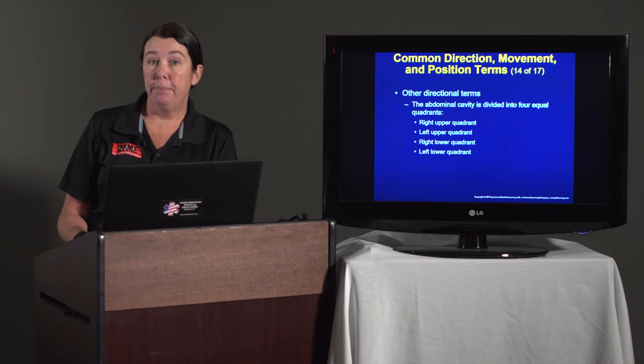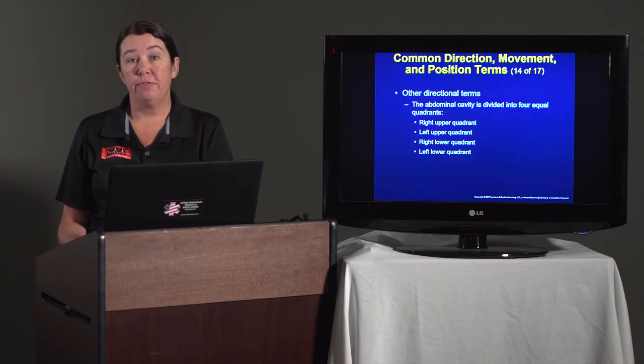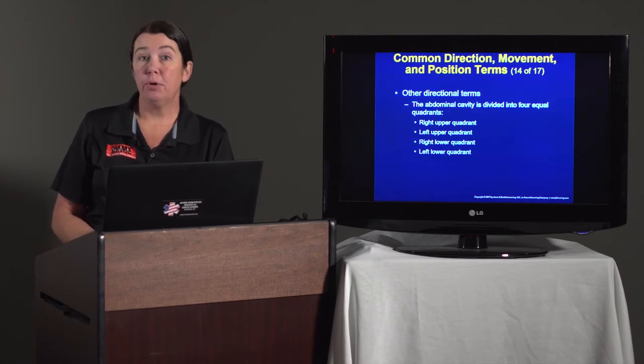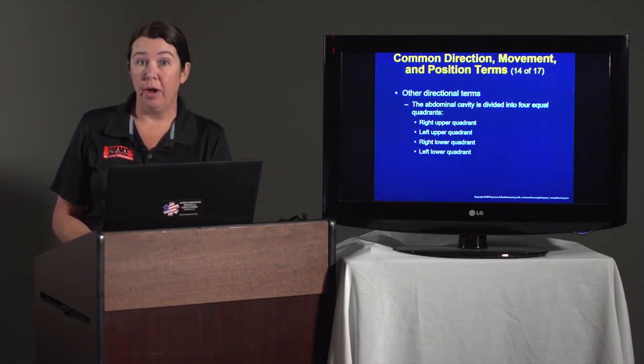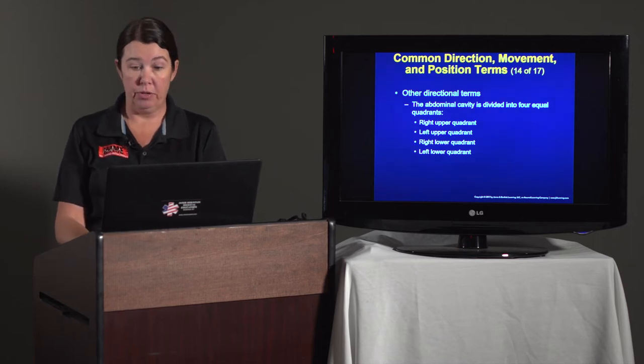The abdominal cavity is divided into four equal quadrants. We call them the right upper quadrant, the right lower quadrant, the left upper quadrant, and the left lower quadrant. We use these terms to describe location of injuries and assessment findings on our patient. Some medical personnel will know where to look and what to expect.